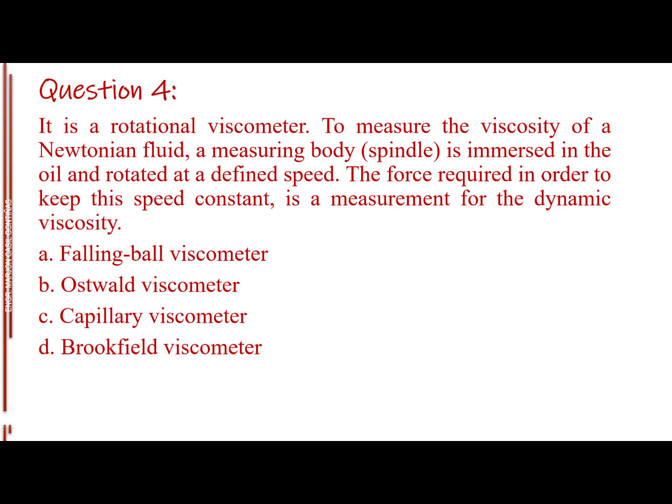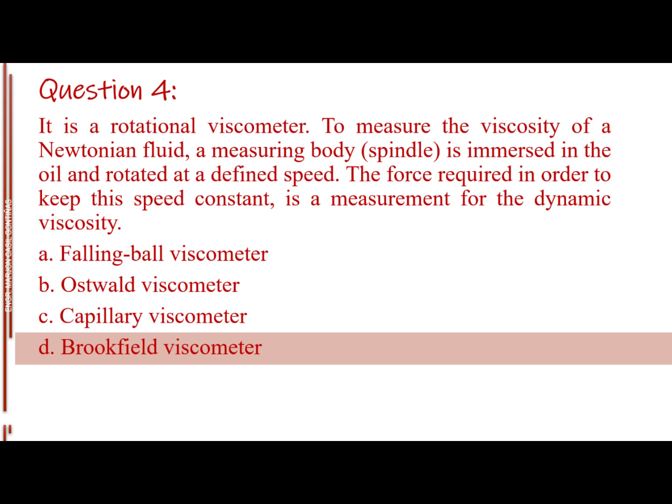Question number 4. It is a rotational viscometer. To measure the viscosity of a Newtonian fluid, a measuring body (spindle) is immersed in the oil and rotated at a defined speed. The force required to keep this speed constant is a measurement for the dynamic viscosity. Letter A, falling ball viscometer. Letter B, Ostwald viscometer. Letter C, capillary viscometer. Letter D, Brookfield viscometer. The answer is Letter D, Brookfield viscometer.